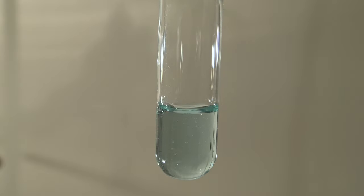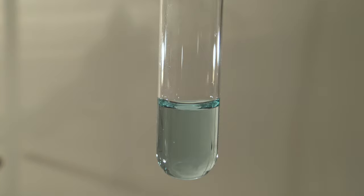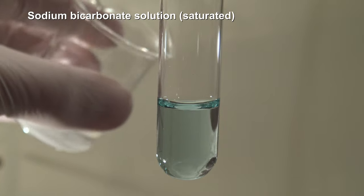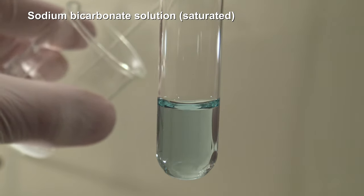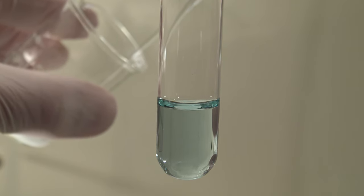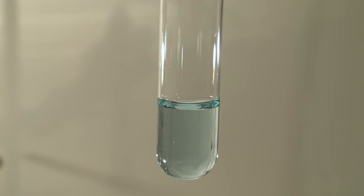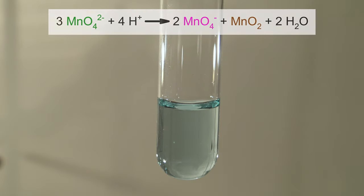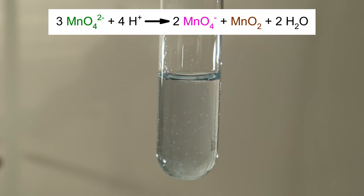To test if this is indeed manganate-6, a saturated solution of sodium bicarbonate was added. Interestingly, the bicarbonate acts as an acid. The acidification of the solution causes the manganate-6 to disproportionate into the permanganate and manganese dioxide.